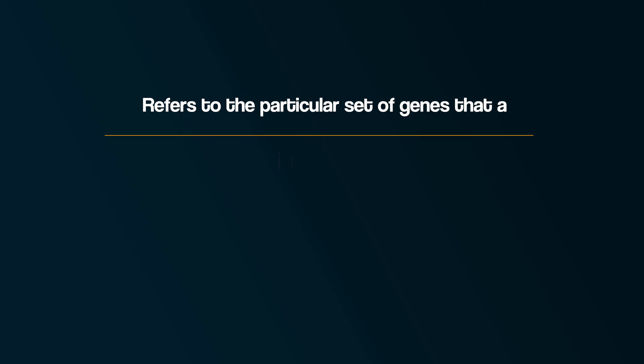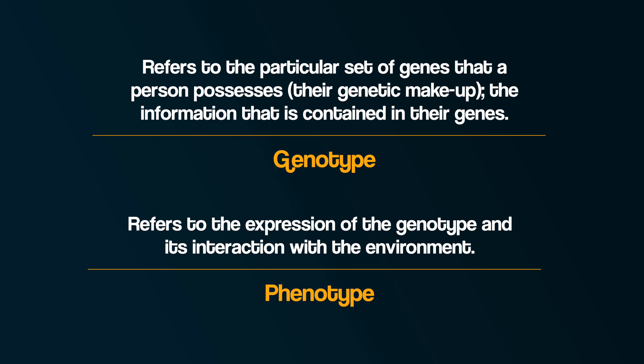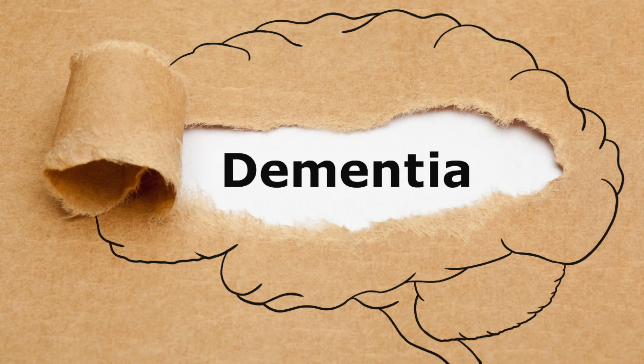One of the ways that researchers can explore the role of genetics in behaviour is by studying twins. There are two main types of twins. Monozygotic twins — mono meaning one, zygotic meaning egg — are identical twins from one fertilised egg and therefore share 100% DNA. Then there are dizygotic twins — di meaning two — who are non-identical twins from two separate fertilised eggs and therefore share 50% DNA. In other words, monozygotic twins are more genetically similar than dizygotic twins.